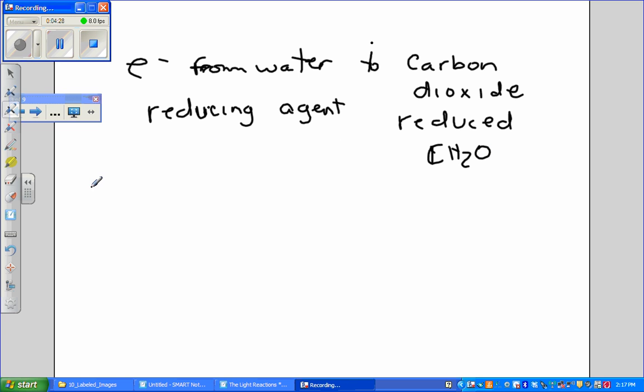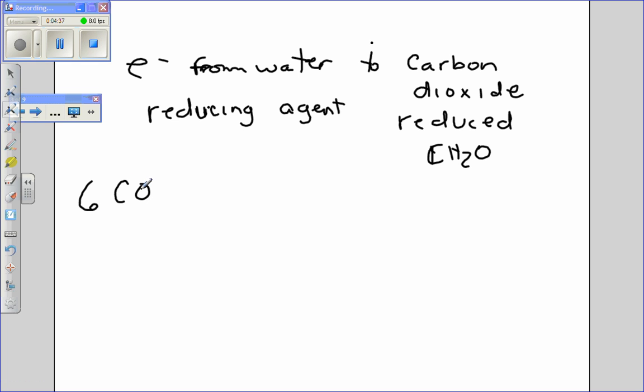The general reaction for photosynthesis showing only the net consumption of water is 6CO2 plus 6H2O plus light energy in the form of photons to yield glucose, C6H12O6 plus oxygen.